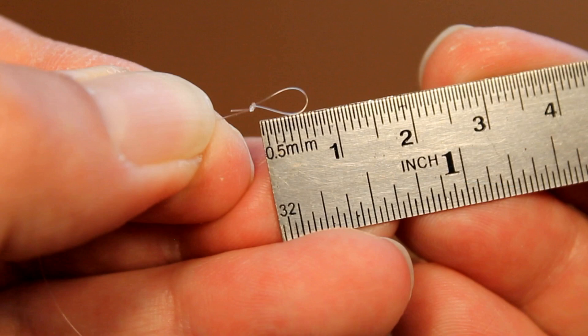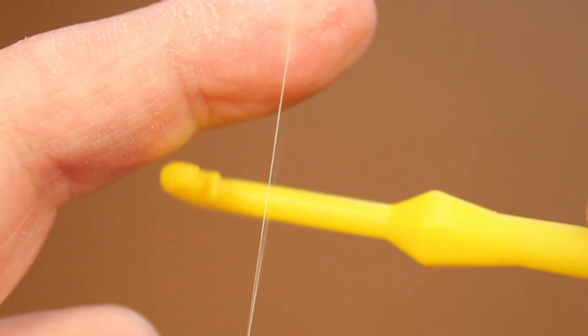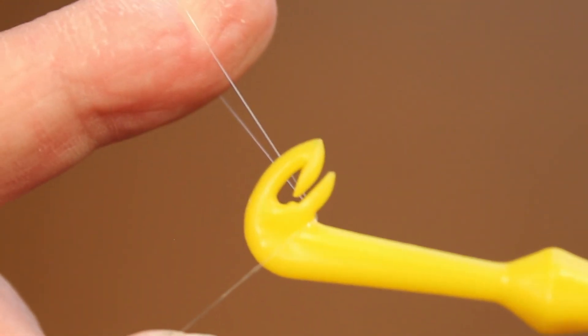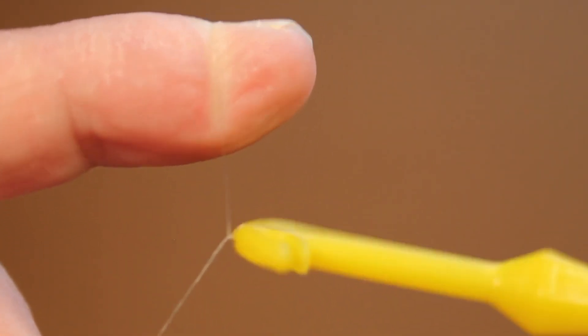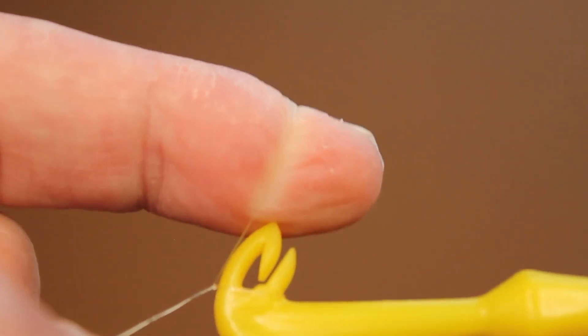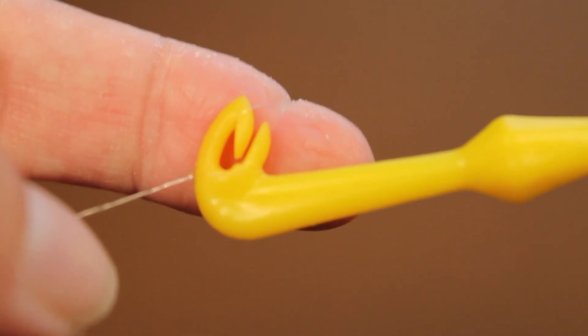Small loops can be made with a loop tyre. Hold a loop of line over your index finger. Hook the tool over, rotate the tool once, pass the loop through the gap in the tool and pull your finger out.